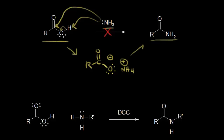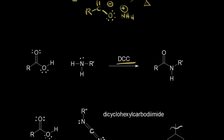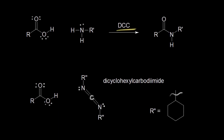If you heat up this salt, you actually can sometimes form your amide. However, this is definitely not the best way to make an amide. A much better way would be to use something called DCC, which is an acronym for dicyclohexyl carbodiimide.